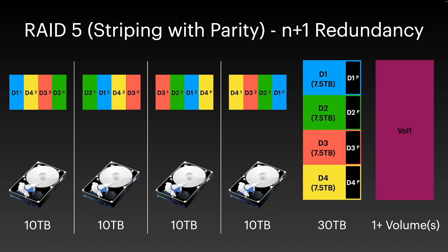RAID 5 provides N+1 fault tolerance, meaning that any one disk can fail without data loss, though an array with a failed disk will be running in a degraded state with lower performance until the array is rebuilt with a replacement disk. RAID 5 is usually very effective from a cost-per-capacity perspective, as you can grow the array and still only pay the tax of one disk for parity. However, as your array grows, the more disks you have, the greater the chance you could lose more than one disk at a time. Also, the larger the array in terms of disk count and disk size, the longer RAID rebuilds will take, which can put stress on remaining disks.